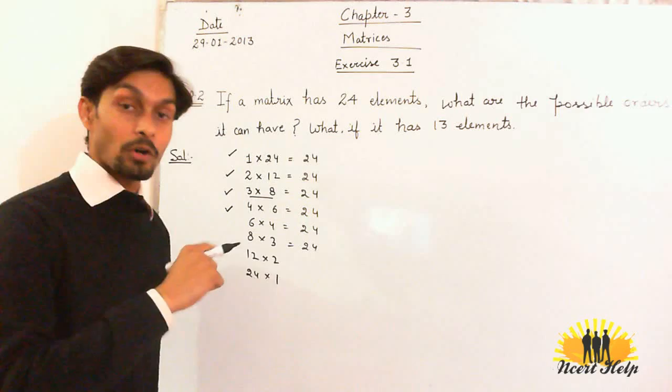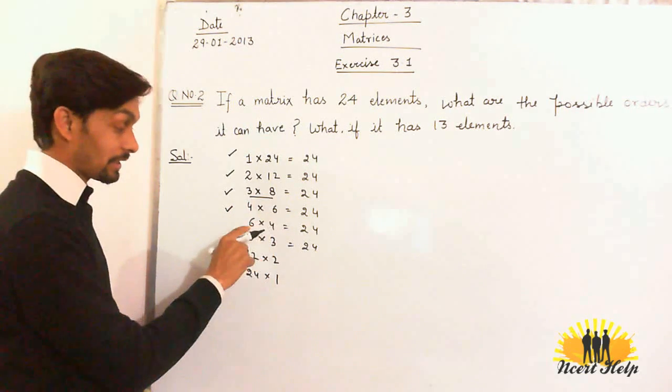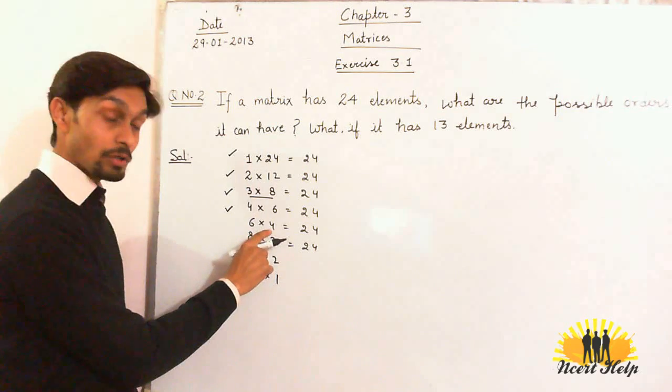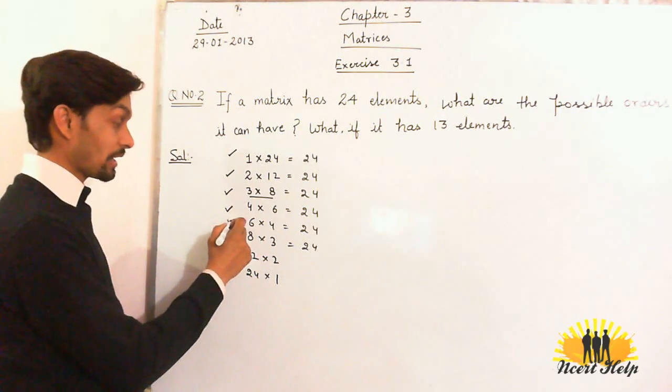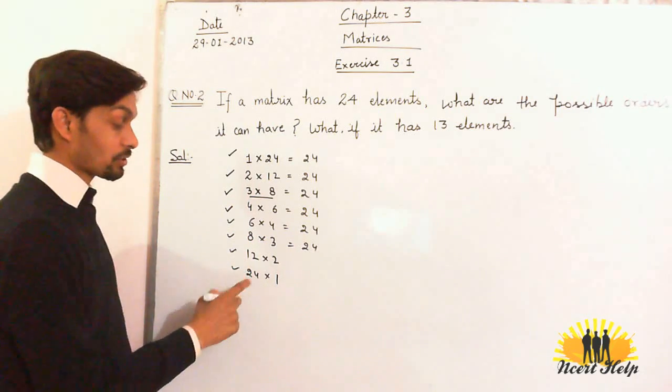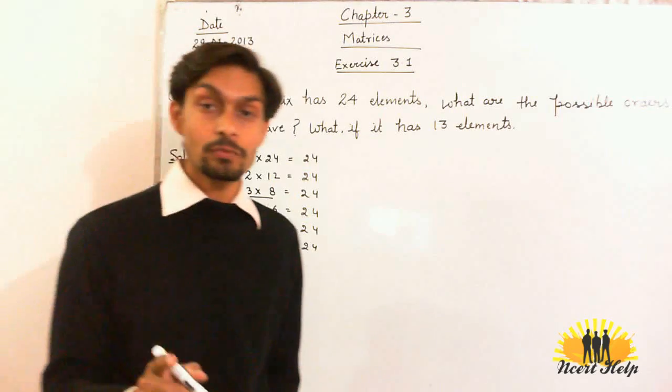Here, it is 4 rows and 6 columns. And here, 6 rows and 4 columns. So, different orders of the matrix. So we have 8 possible orders of a matrix if it has 24 elements.